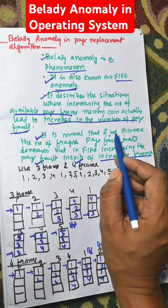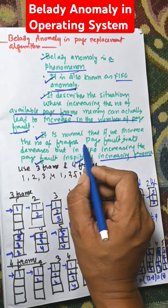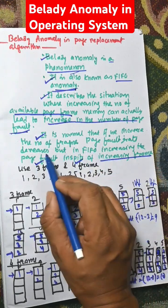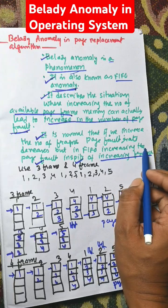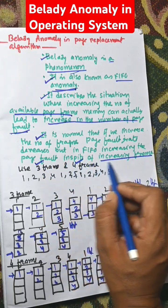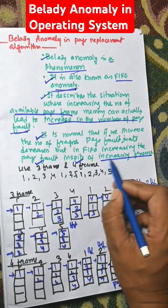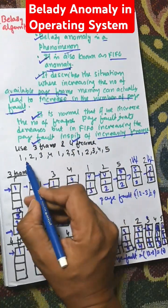It is normal that if we increase the number of frames, the page fault rate decreases. But in FIFO, increasing the number of frames can actually increase page faults instead. Consider the following example.